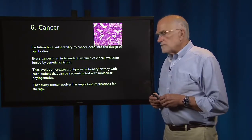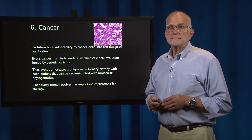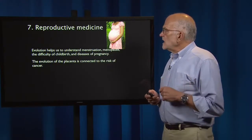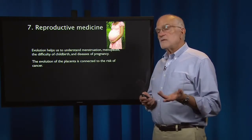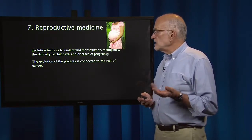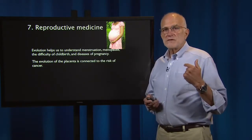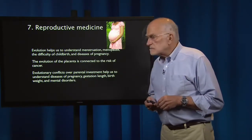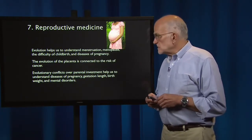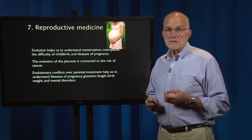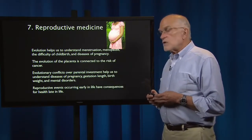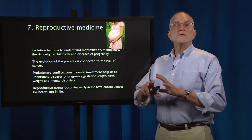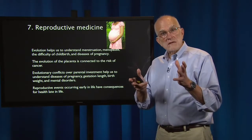The fact that every cancer evolves has some very important implications for therapy. There are also evolutionary insights in reproductive medicine. Evolution helps us to understand menstruation, menopause, the difficulty of childbirth, and the diseases of pregnancy. It also allows us to see that the evolution of the placenta is connected to the risk of cancer. Evolutionary conflicts over parental investment help us understand the diseases of pregnancy, gestation length, and birth weight, and give us some insight into mental disorders. Reproductive events that occur early in life have consequences for health late in life.